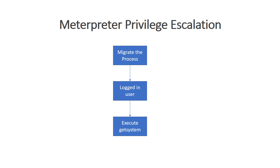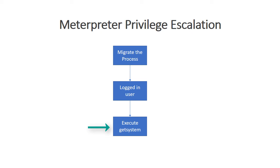Let me show you the workflow of meterpreter privilege escalation before we proceed. First, you will need to list the processes on the Windows machine and pick one to migrate to. After this, I will check the user I'm logged in as to have an idea about who I am. Finally, we will execute the getsystem command to elevate our privileges.